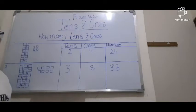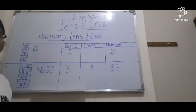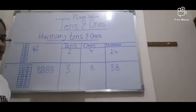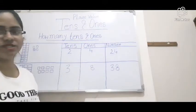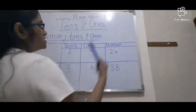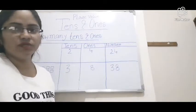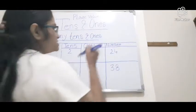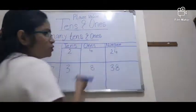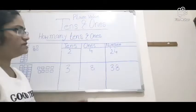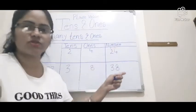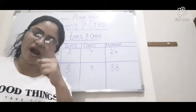The unit digit of a number is the digit in the 1s place of the number. It is the rightmost digit of the number. For example, if I have written the number 24, then 4 is the 1s place — the unit place — and 2 is the 10s place.